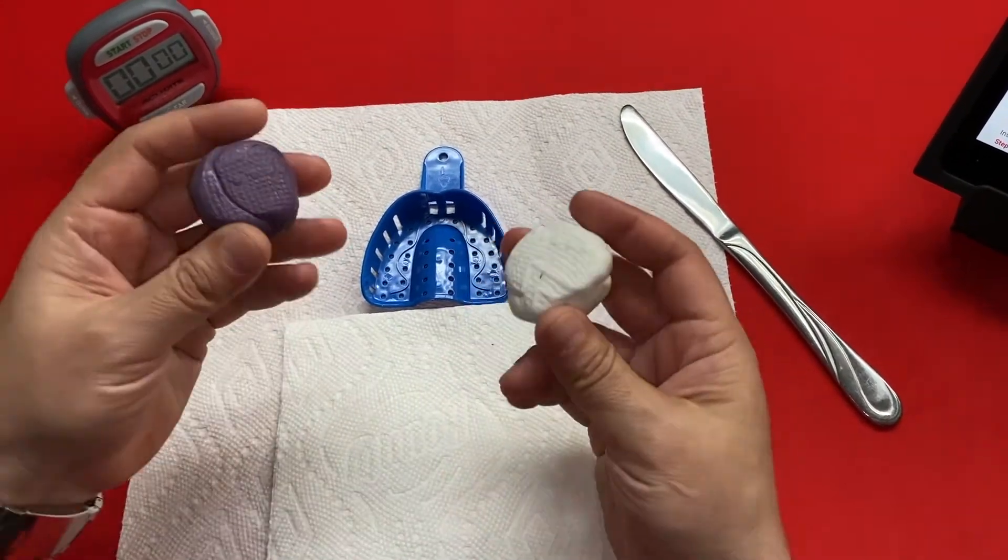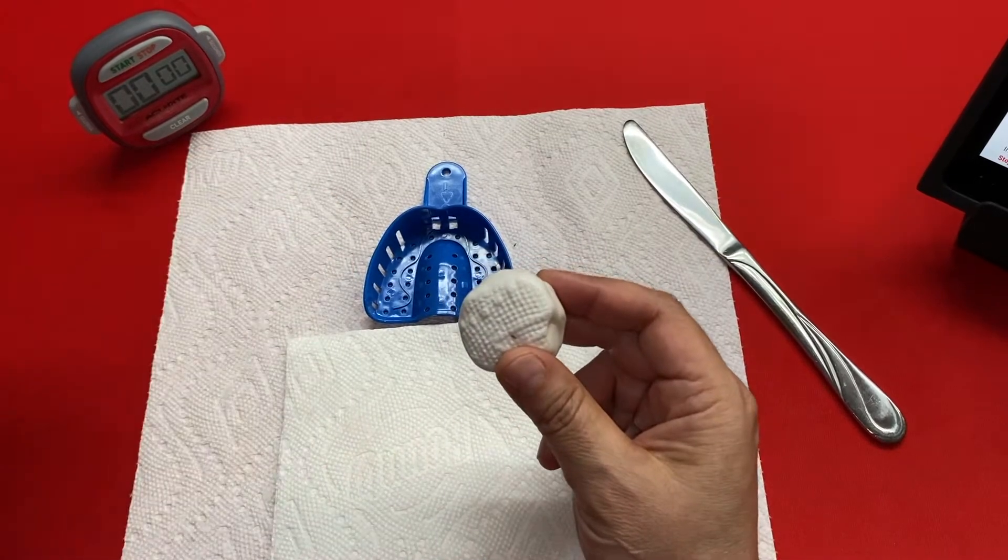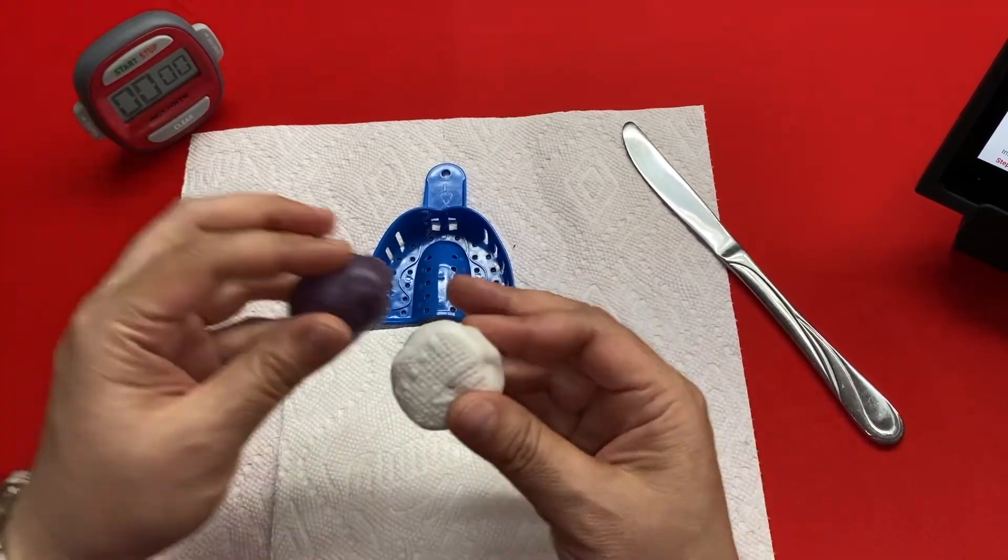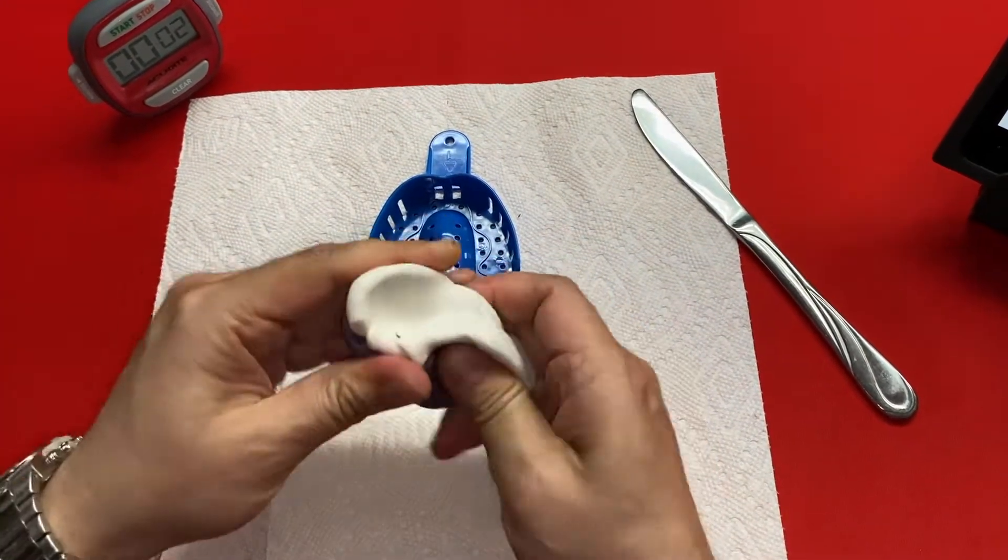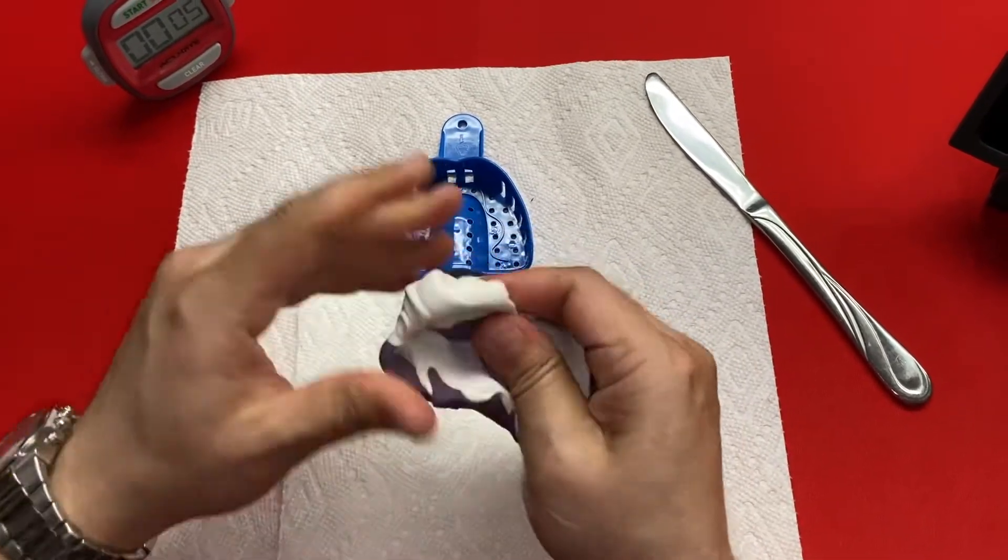You've taken your putty out of the fridge; it's been in there for at least one hour. Now, as you start mixing, you're going to hit the timer at the same time. We're going to mix for exactly 45 seconds.